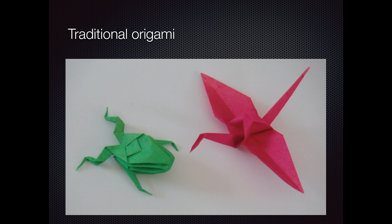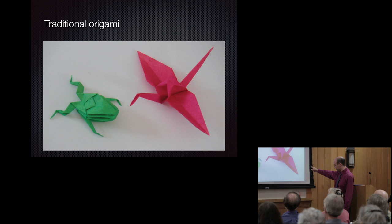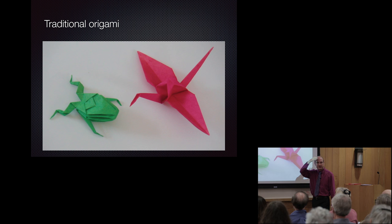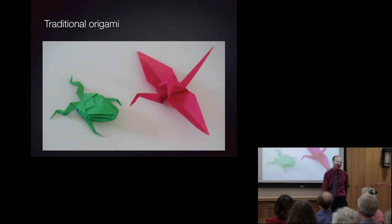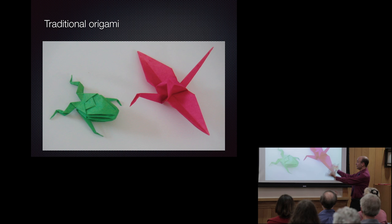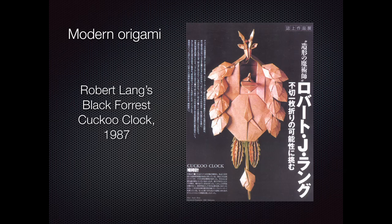Traditional origami goes back to 1600s Japan, though no one really knows exactly when. These classic origami models include the classic Japanese crane — the oldest reference found is around 1625 — and the classic traditional Japanese frog, perhaps from the 1700s. They're really elegant, very economical, and no part of the paper is wasted.